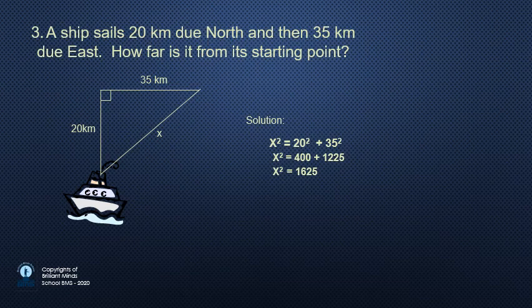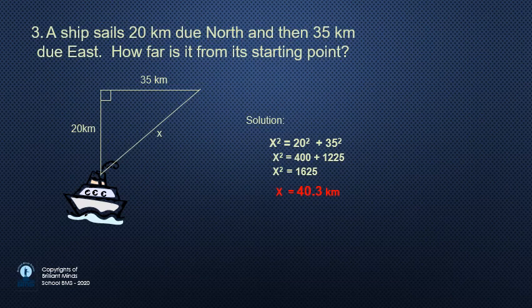Then x power 2 equals 400 plus 1225, and x power 2 equals 1625.